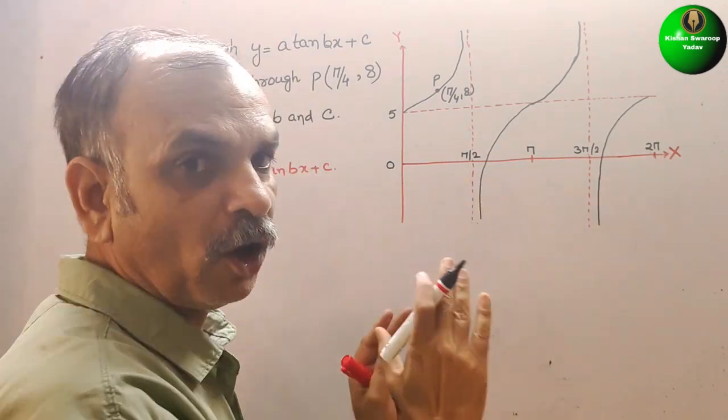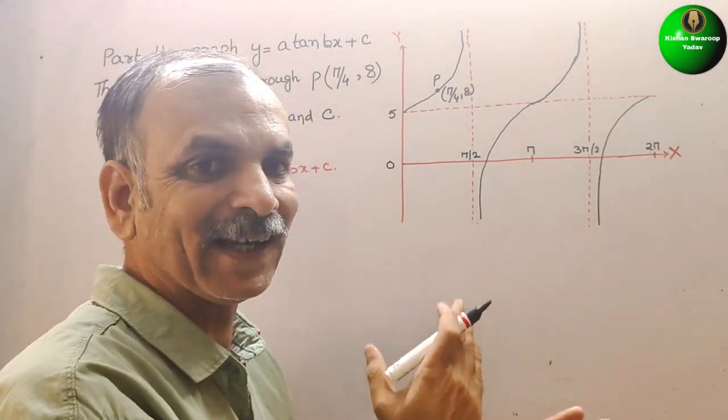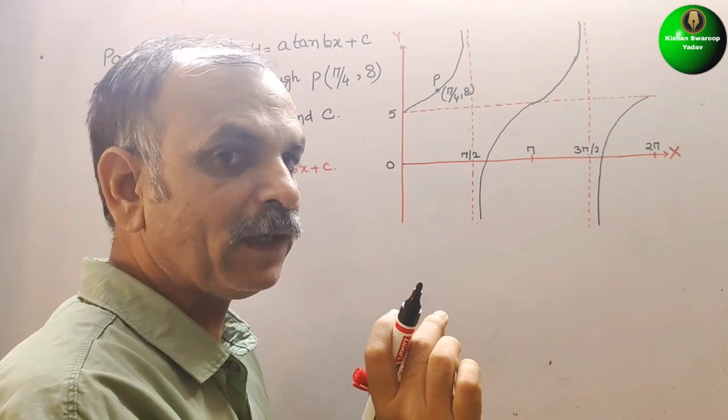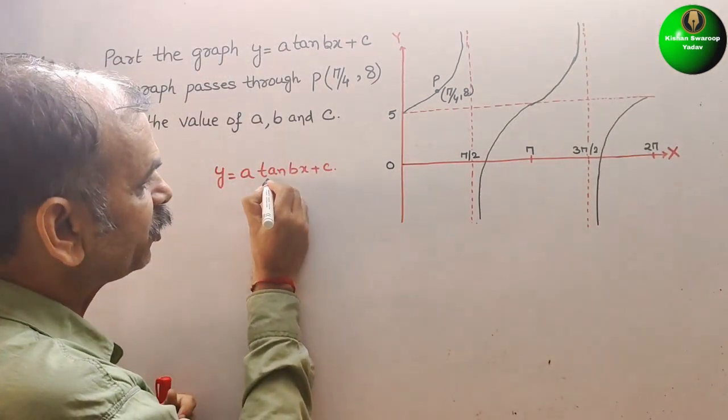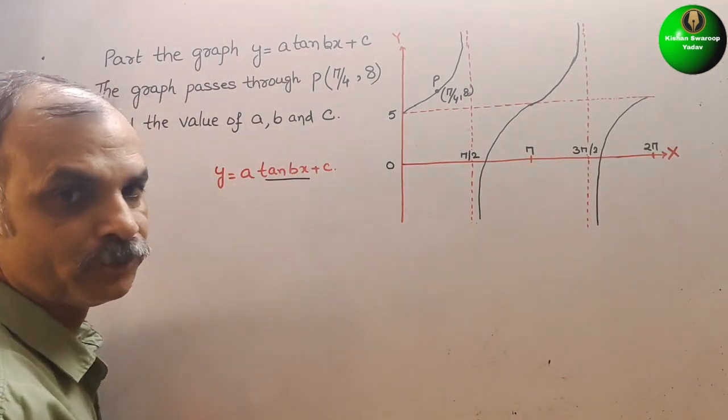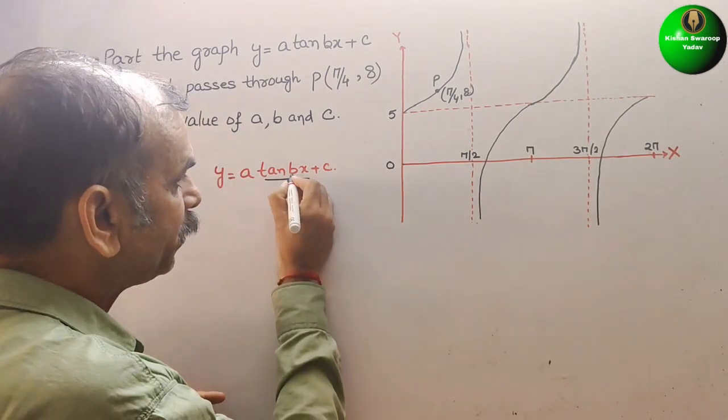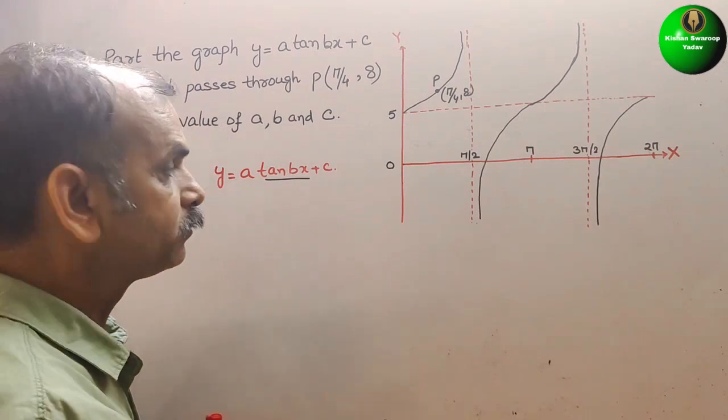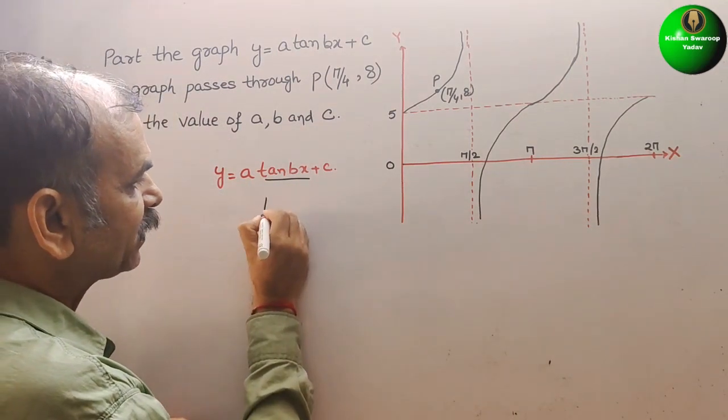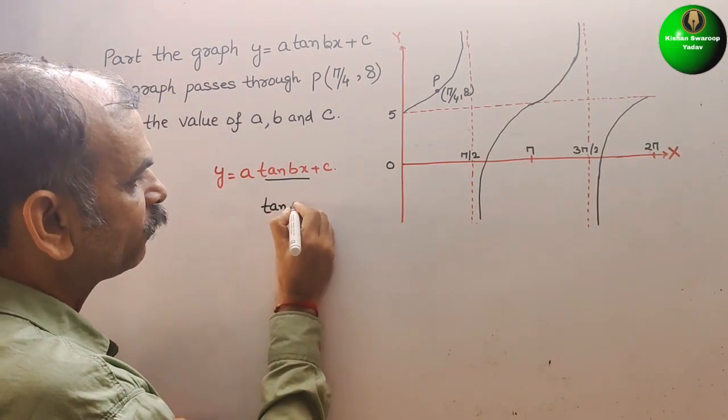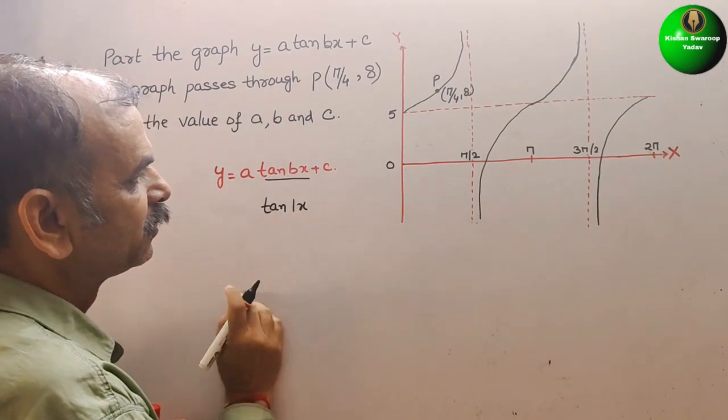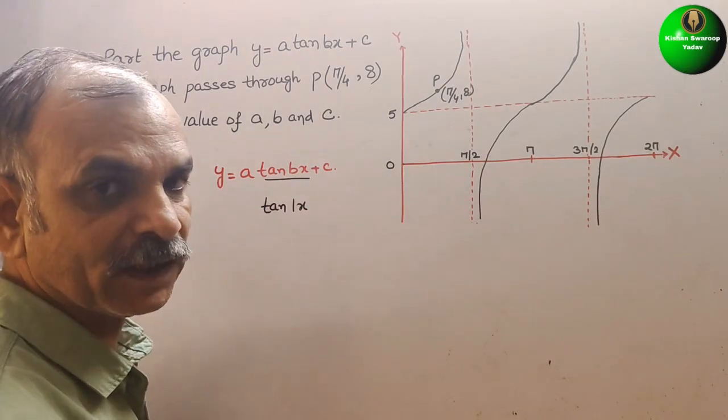So we will get what? You can see, this is your angle. So we have not shifted. That means, b is your 1. So now we can say tan 1x. We have not shifted.